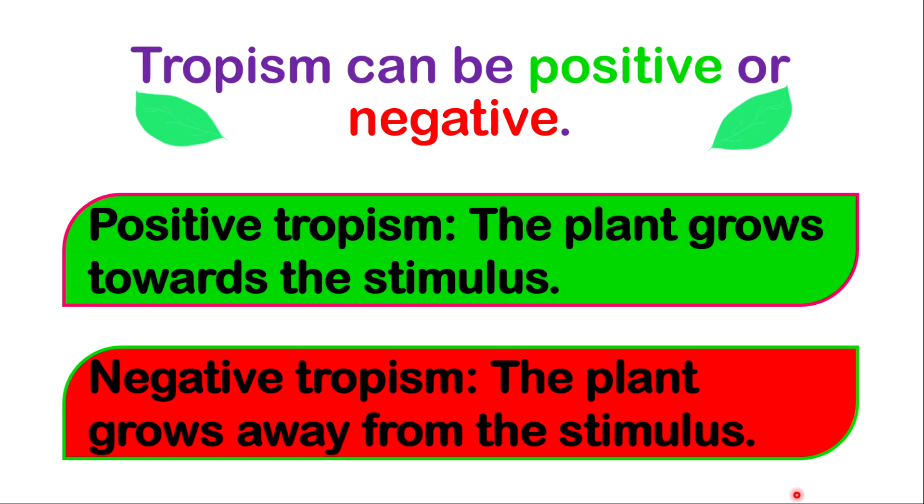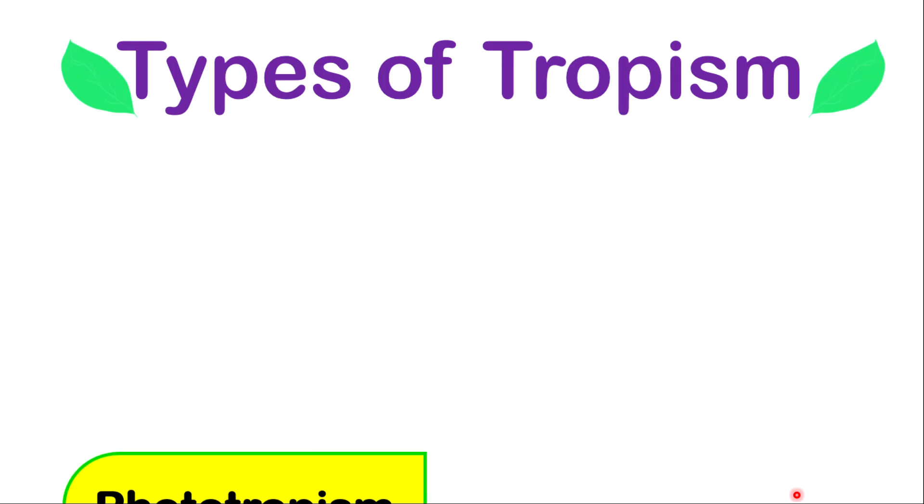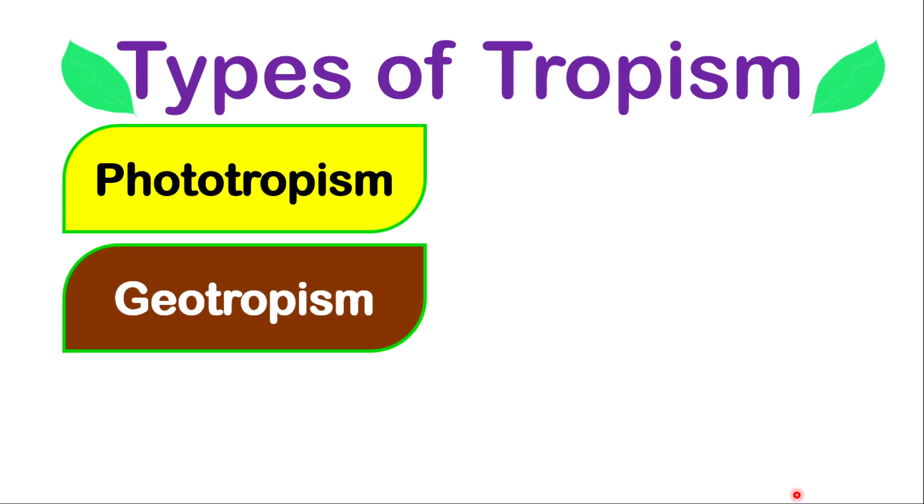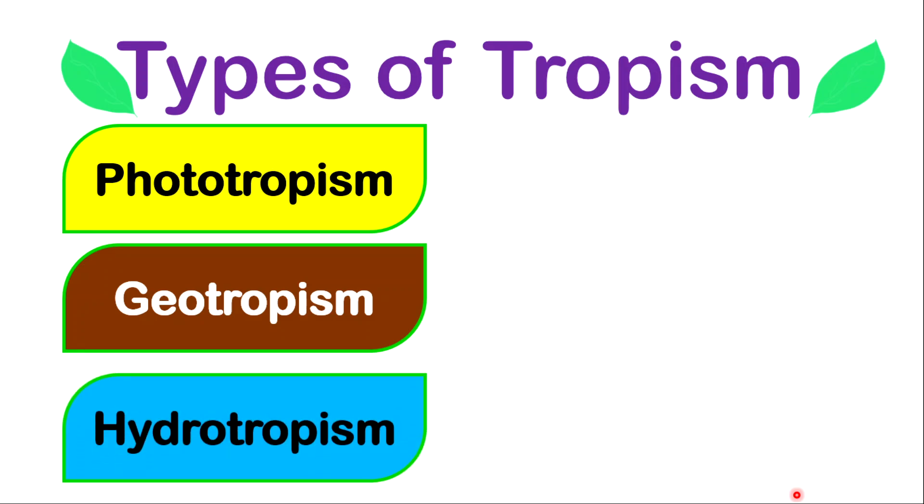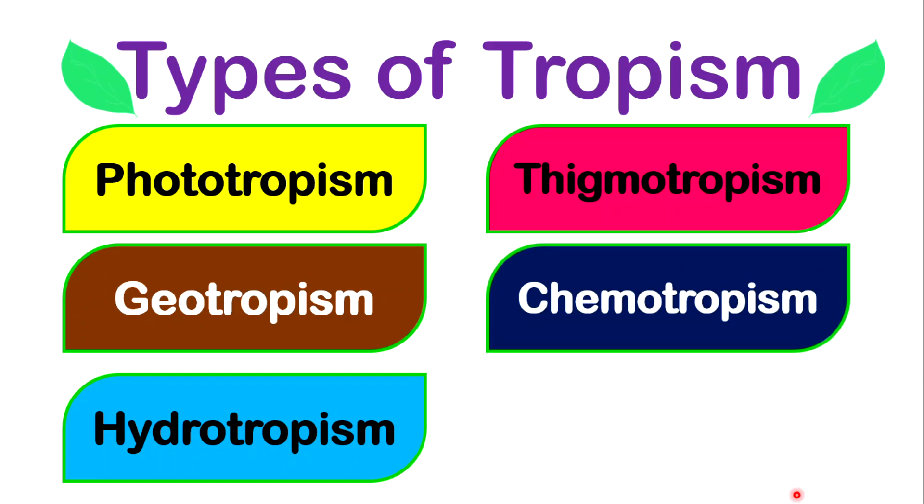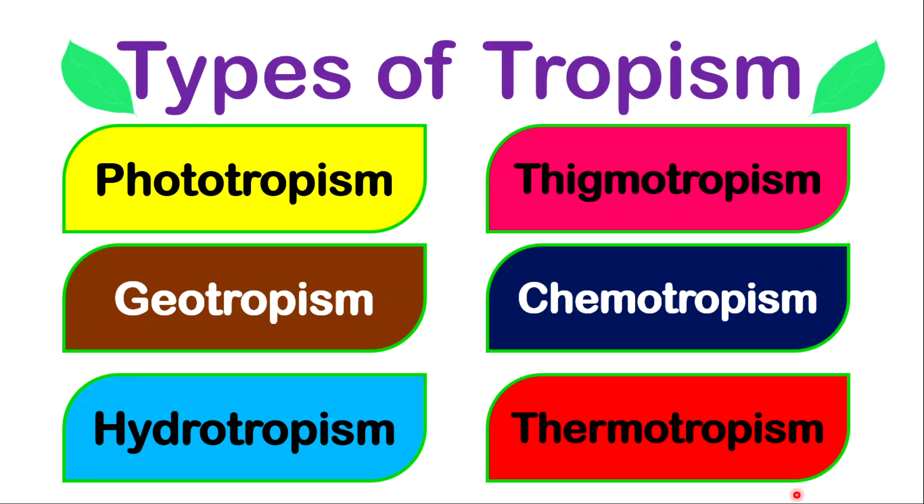Now let us look at the types of tropic response, or tropism. We have phototropism, geotropism, hydrotropism, thigmotropism, chemotropism, and thermotropism. These names will be very easy to remember based on the stimulus. Let's go into the first one.